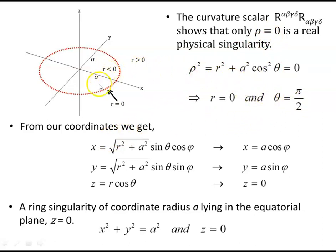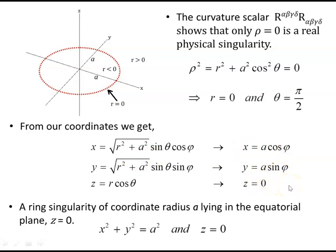Taking that back to our coordinates: the coordinates for the Kerr black hole use an oblate spheroid system, so it bulges in the equatorial plane. The coordinates from Cartesian to spherical polar are: x = √(r² + a²) sin θ cos φ, y = √(r² + a²) sin θ sin φ, and z = r cos θ. To satisfy the singularity condition, r = 0 sends z to 0, and θ = π/2 gives sine = 1, leaving x = a cos φ, y = a sin φ, z = 0. This describes a circle of radius a in the equatorial plane — a ring singularity of coordinate radius a.